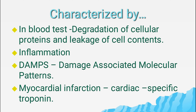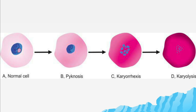Specific substances released from injured cells are called DAMPs — damage-associated molecular patterns — such as uric acid from the degradation of DNA, and ATP from the mitochondria. Cardiac-specific troponin serves as a biomarker in myocardial infarction. When a large number of cells die, the organ is said to be necrotic.